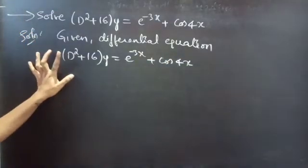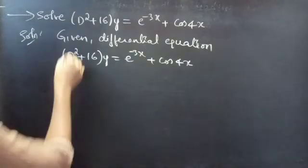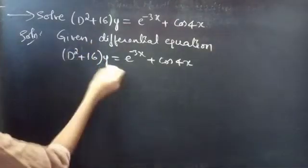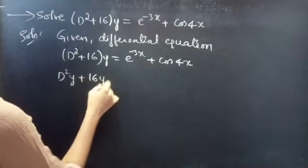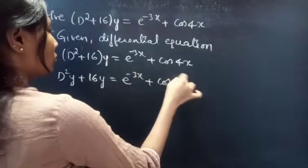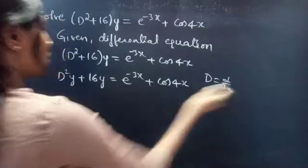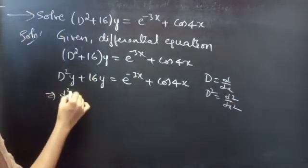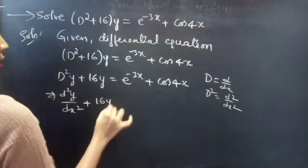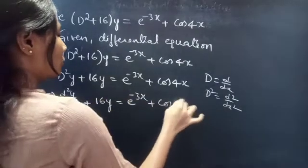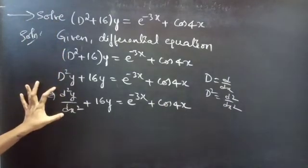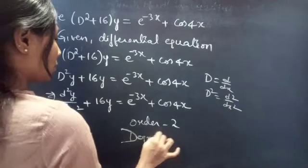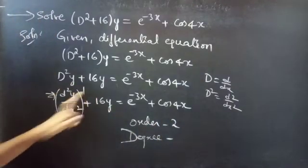Here, the highest derivative is d², so our order is 2. And the highest power of the highest derivative is 1, so our degree will be 1. You can write this as d²y + 16y = 3e^(−3x) + cos4x. We know the differential operator equals d/dx, and d² equals d²/dx². The highest derivative is d²y/dx², so order is 2 and degree is 1.